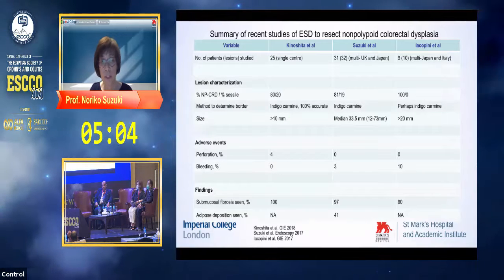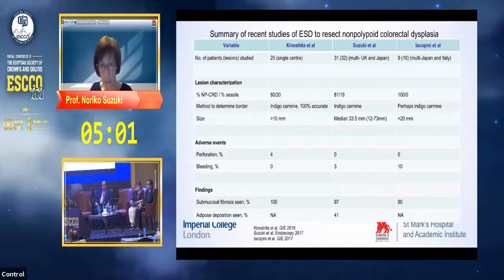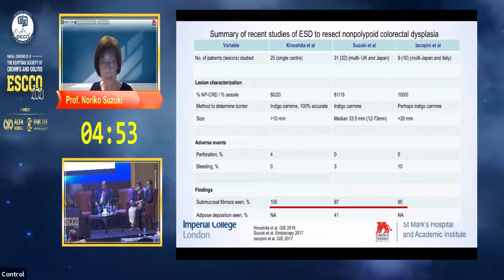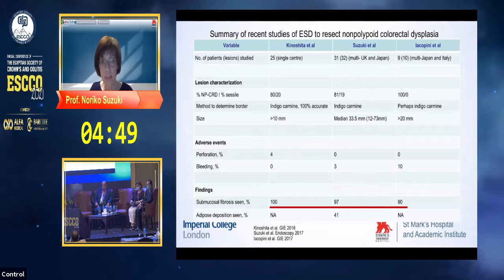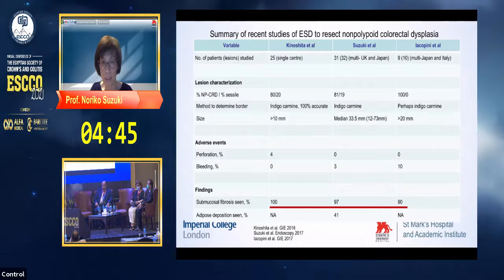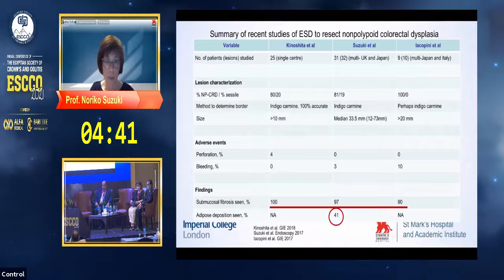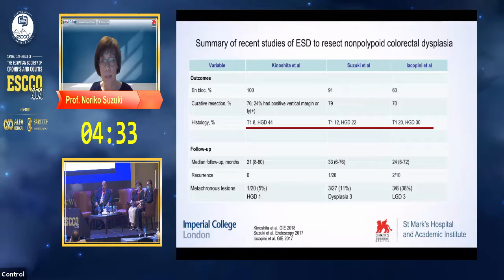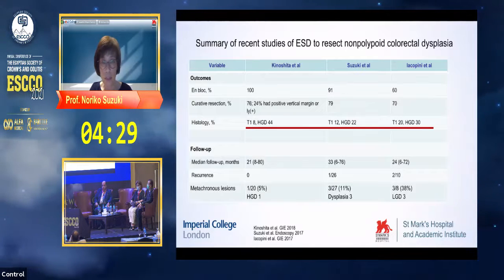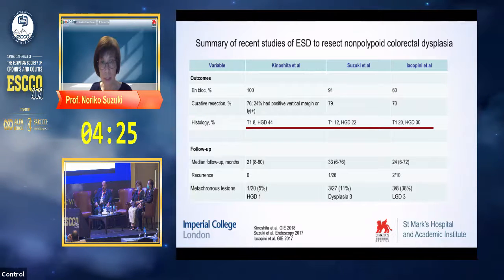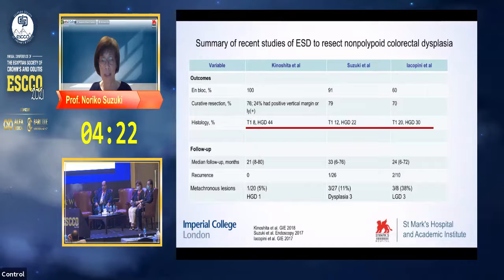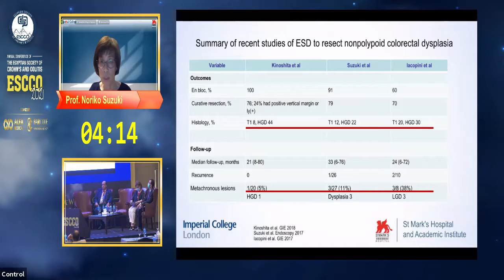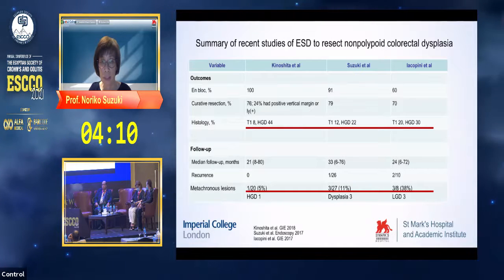From a summary of recent studies on ESD for colitic dysplasia: submucosal fibrosis is a very common finding. In terms of adverse events, ESD can be performed fairly safely. Fat deposition is quite a common finding. Although previous biopsies showed low-grade dysplasia, once the whole region is excised, there is sometimes a discrepancy — advanced lesions are quite common. We are treating only the local area, not the whole bowel, therefore metachronous lesions are also a common finding.